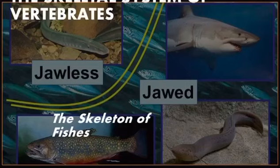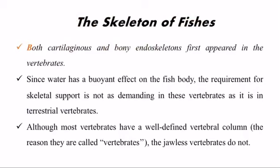The skeleton of fishes: Both cartilaginous and bony endoskeletons first appeared in vertebrates. Since water has a buoyant effect on the fish body, the requirements for skeletal support are not as demanding in these vertebrates as in terrestrial vertebrates. Although most vertebrates have a well-defined vertebral column, the jawless vertebrates do not.